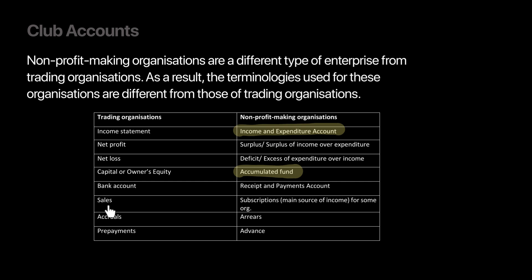A profit-making entity will have sales, but a not-for-profit organization will have subscriptions. We will discuss subscriptions in detail, but for the time being, you can think of subscription as the membership fee. The word accruals will now be replaced by arrears. If there is any outstanding amount for subscription, we will use the word arrears. And if there are any prepayments made, we will use the word in advance. So we are essentially referring to subscription — your membership fee — on which a not-for-profit organization would operate.